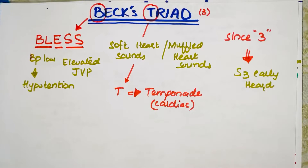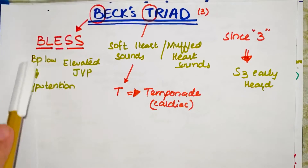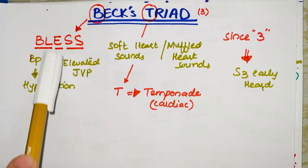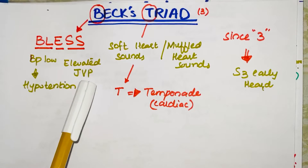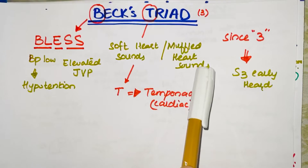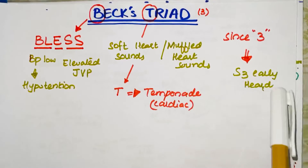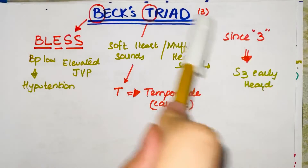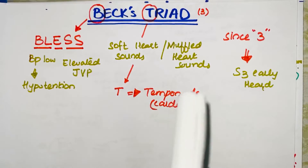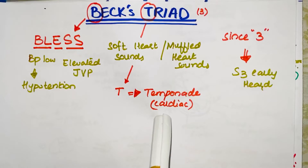Here is a summary: from B remember 'Beck is Blessed' — low BP or hypotension is the first point; E stands for elevated JVP, the second point; SS stands for soft or muffled heart sounds, the third point. Since there are three points, S3 is heard early. And this triad signifies T — tamponade — so it occurs in patients with cardiac tamponade.